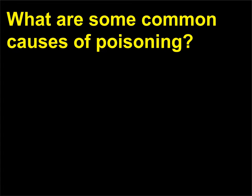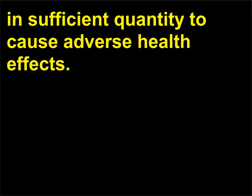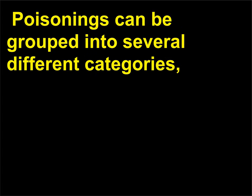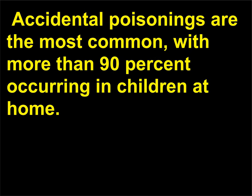What are some common causes of poisoning? Poisoning is defined as the exposure to any substance in sufficient quantity to cause adverse health effects. Poisonings can be grouped into several different categories, including intentional, accidental, occupational, environmental, social, and iatrogenic. Accidental poisonings are the most common, with more than 90% occurring in children at home. Intentional poisonings are usually suicide-related.